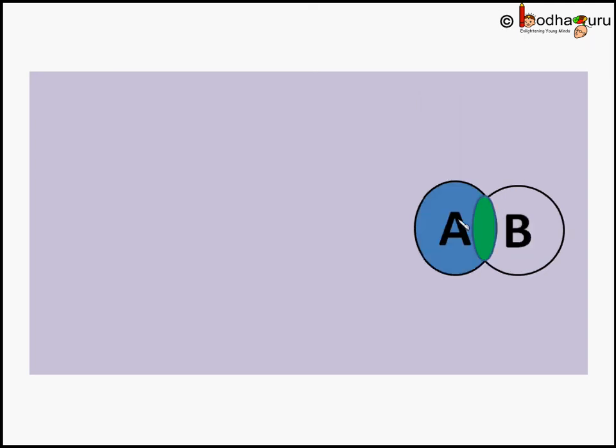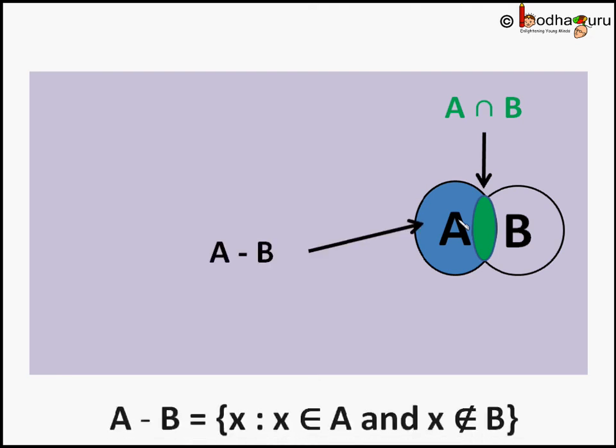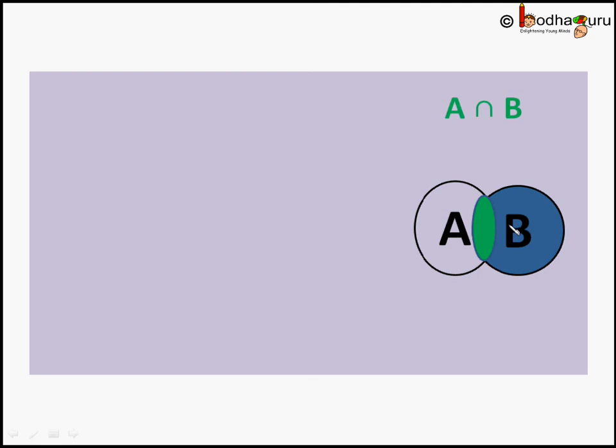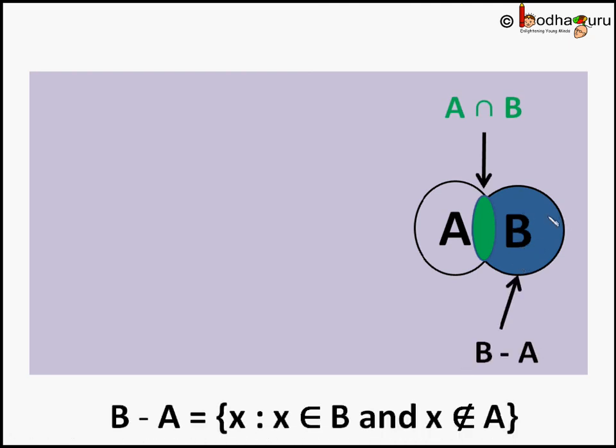So given set A and B, A minus B includes all the elements of A which are not in the B. So it is represented by the blue area given here in the Venn diagram. And B minus A includes all the elements of B which are not in A.